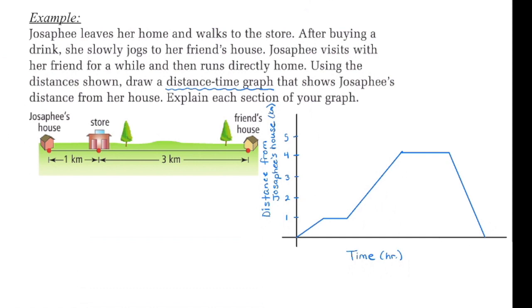She then jogs to her friend's house. And if we go back over here, we can see that if this is Josephine's house, her friend's house is in total four kilometers away from her house. So at four kilometers here, she needs to reach her friend's house. And again, I'm going to have a line that has a steeper slope than what I started with, because here she's walking, here she's jogging. So she's going to be moving faster. She then visits her friend for a while. So again, we have a horizontal line. There's no rate of change. Time is passing, but she's not moving from that point she's at.